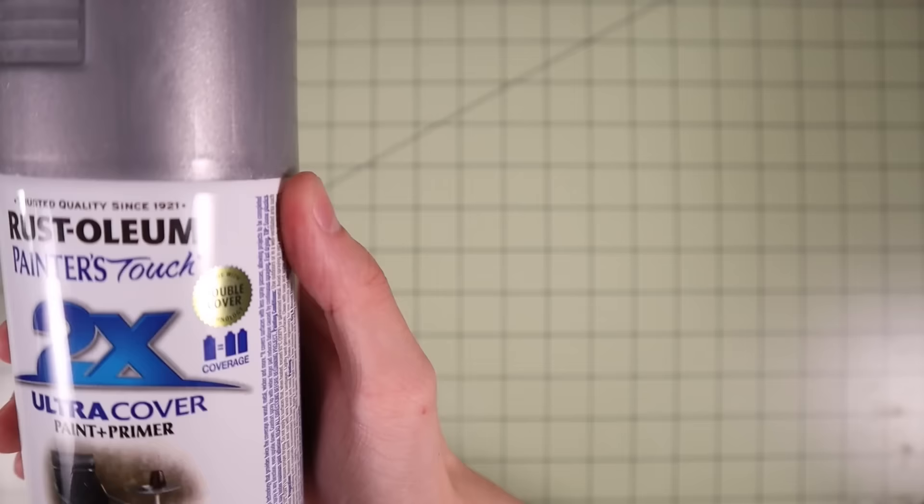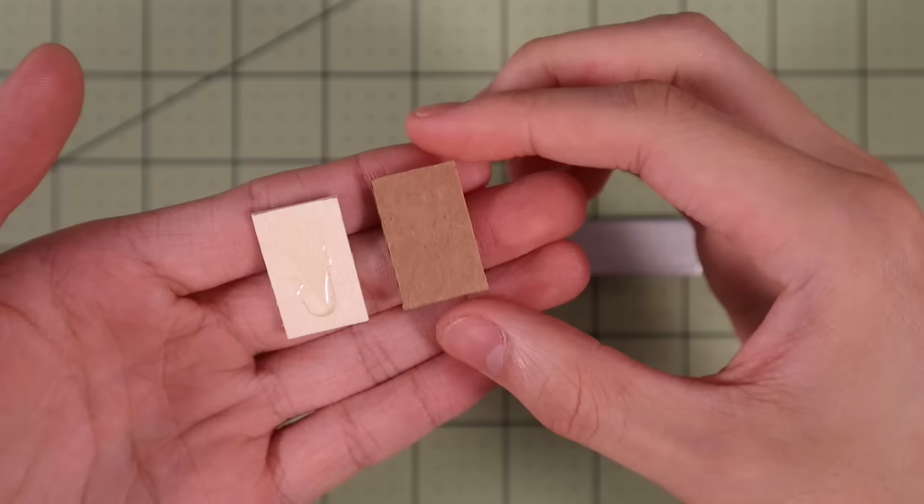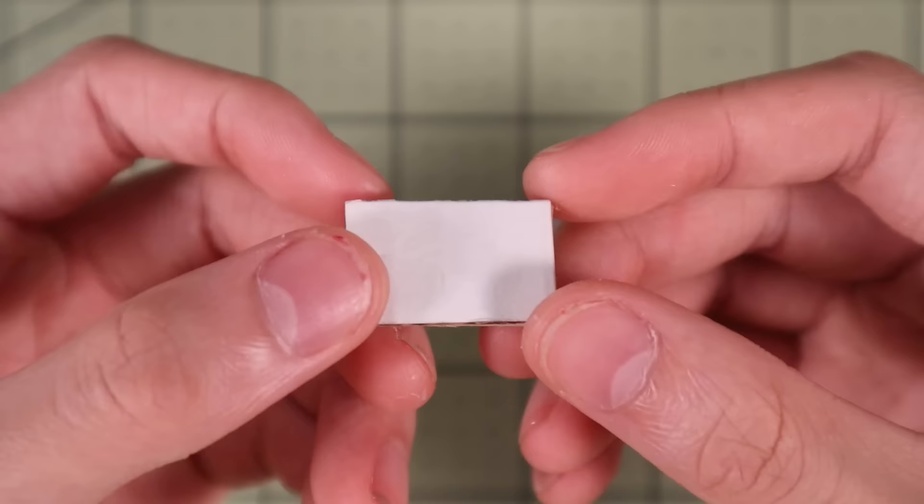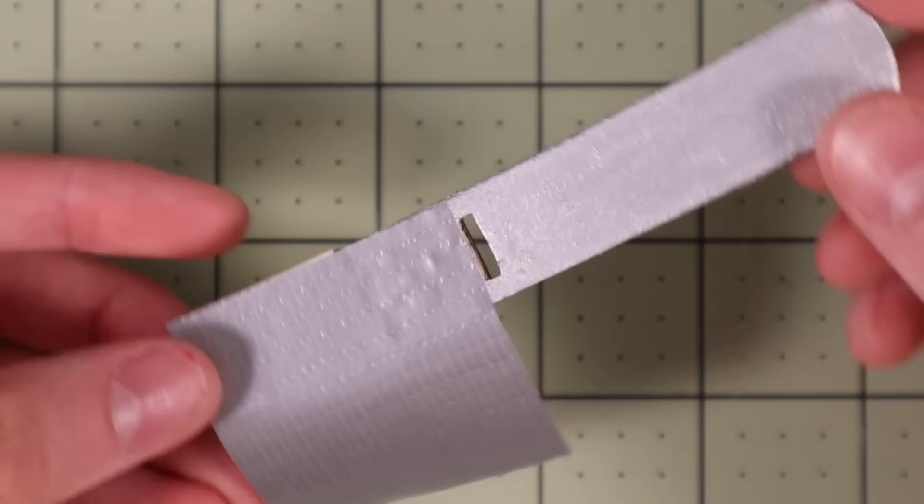The first step to making the Miles Morales web shooter is making the trigger, which is the mechanism that allows you to shoot the web shooter whenever you flex your wrist. To do that, I'm using a combination of three millimeter corrugated cardboard and popsicle sticks. I'm going to connect these two pieces using a small strip of duct tape, and that gap between the pieces is the point where the trigger will bend.